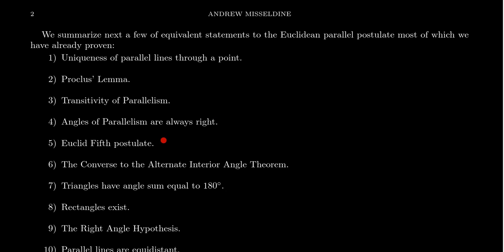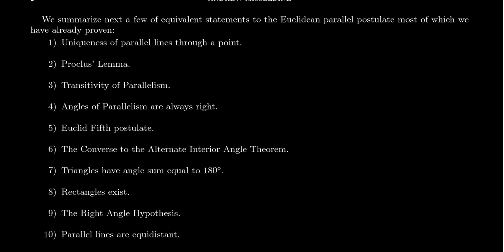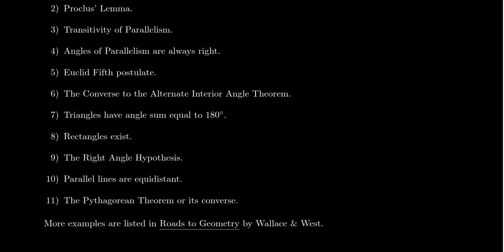In the previous lecture, we showed EPP is equivalent to Euclid's fifth, and also equivalent to the converse of the alternate angle theorem. We then showed — half last lecture, half today — that the 180° condition is equivalent to EPP. If you combine the 180° condition with the existence of right triangles, that's the all-or-nothing theorem from Lecture 26: rectangles exist if and only if all triangles have an angle sum of 180 degrees. Since the 180° condition is equivalent to EPP, the existence of rectangles is equivalent to EPP as well.